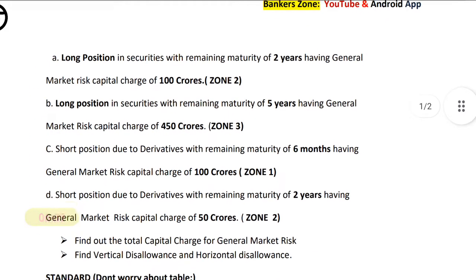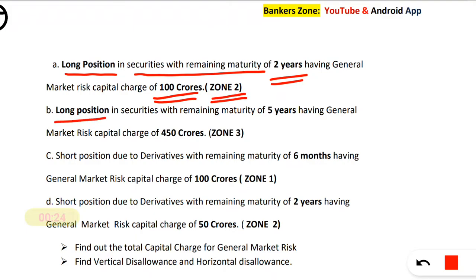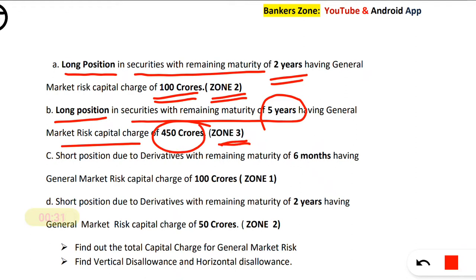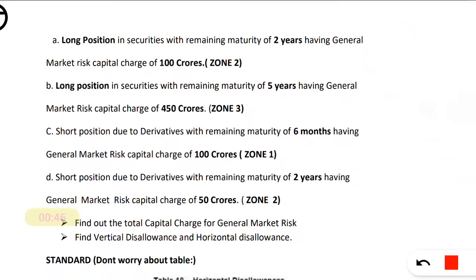Hello friends. Here we will discuss the problem based on horizontal and vertical disallowances. See the problem statement. First, a long position in securities with remaining maturity of 2 years having a market capital charge of 100 crores in Zone 2. Long position in a security with remaining maturity 5 years having capital charge 450 in Zone 3. Next, the short position due to a derivative with remaining maturity of 6 months having a market risk capital charge of 100 crores in Zone 1. And lastly, a short position due to a derivative with remaining maturity 2 years having a capital charge of 50 crores in Zone 2.